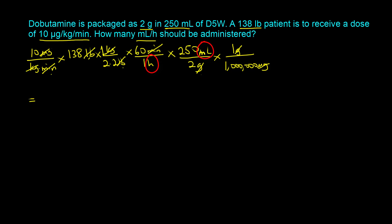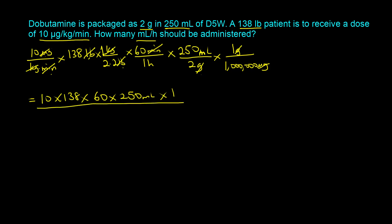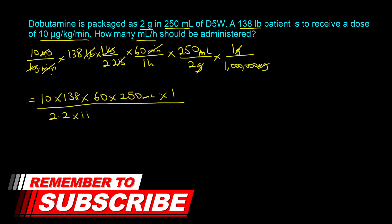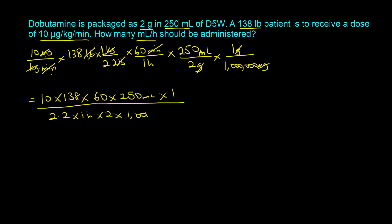The next step is to take all the numbers in the numerator: 10 × 138 × 60 × 250 × 1, and divide by everything in the denominator: 2.2 × 1 × 2 × 1,000,000. When we do the math, that gives us 4.7 milliliters per hour.